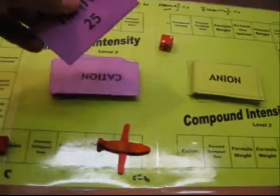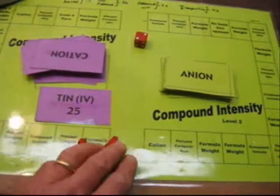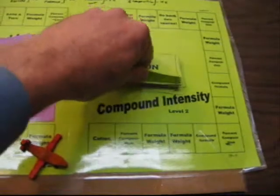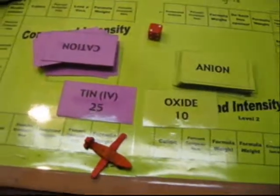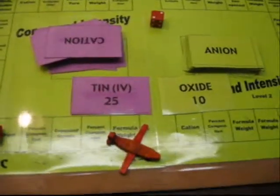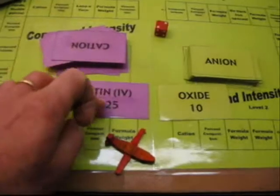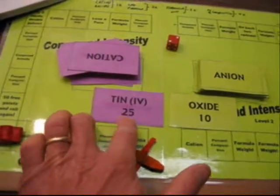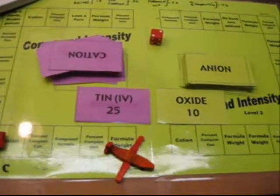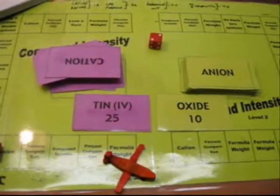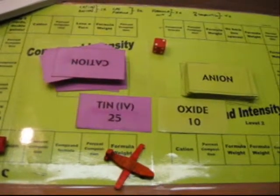Let's just do an example here. In this case, the student drew tin(IV), and then the anion is oxide. Their job, then, would be to find the percent composition of tin(IV) oxide. In this case, it would be 25 plus 10, which would be 35 points, and we'll do that times 4, which I believe is 105 total points for the round.